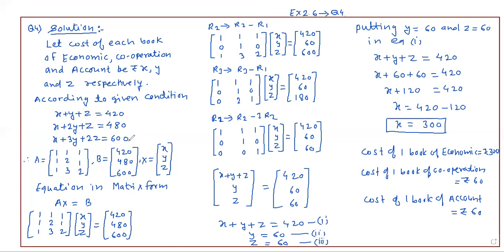I am going to solve this question by the method of reduction. First, the coefficient matrix: X coefficients are 1, 1, 1. Y coefficients are 1, 2, 3. Z coefficients are 1, 1, 2. And the right-hand side values are 420, 480, 600.